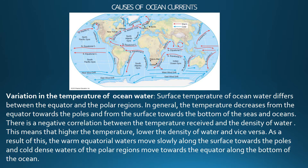Let us discuss the causes of ocean currents. First, we have variation in the temperature of ocean water. The surface temperature of ocean water differs between the equator and the polar regions. In the equatorial region the surface temperature is higher because these areas receive the vertical rays of the Sun, whereas in the polar regions the surface temperature is lower because these areas receive the oblique rays of the Sun. Therefore, temperature decreases from the equator towards the poles and from the surface towards the bottom of the seas and oceans.